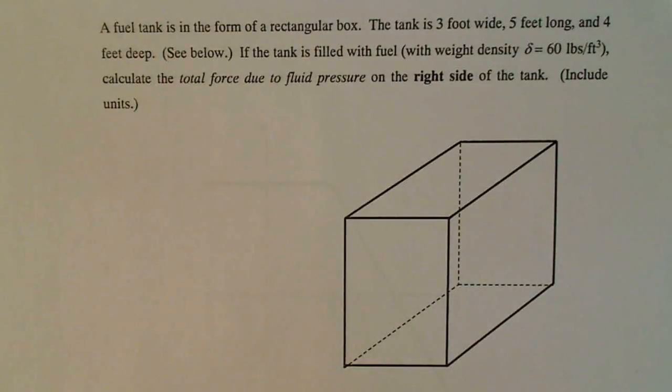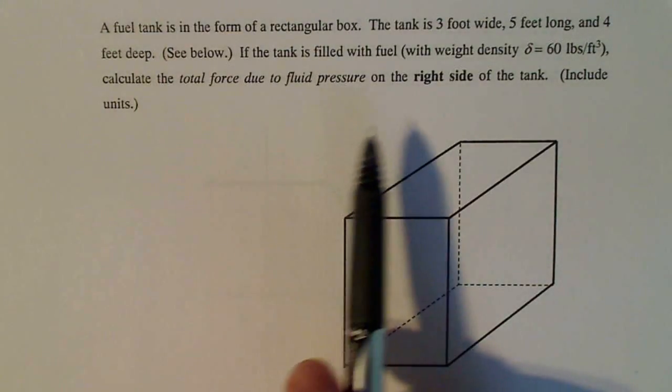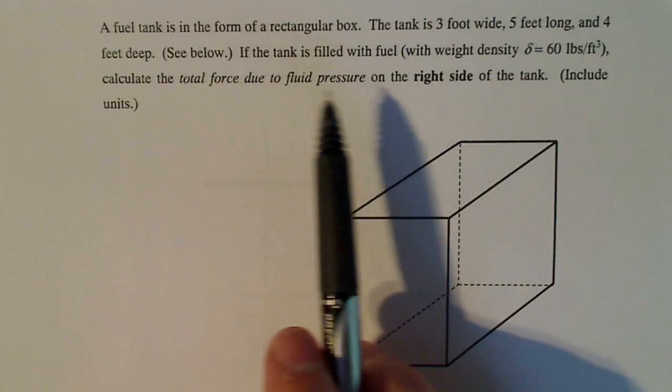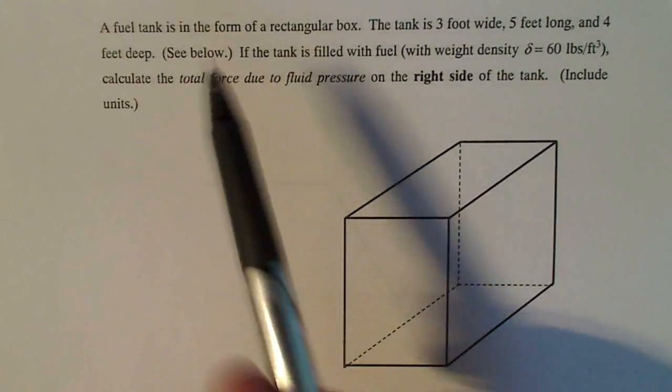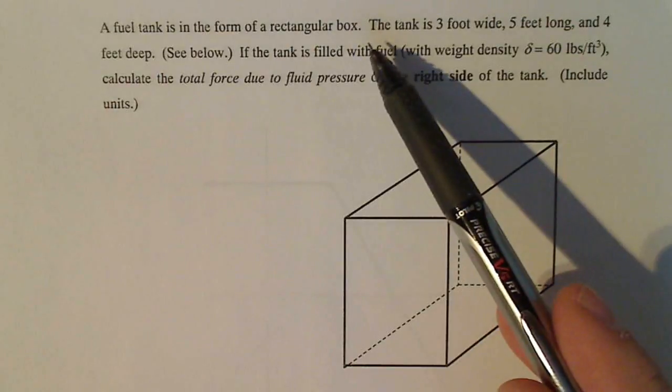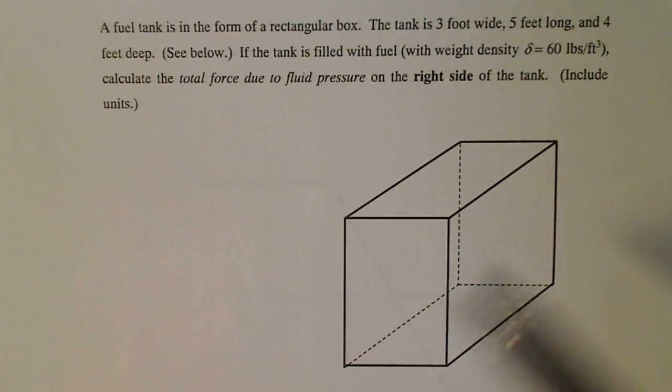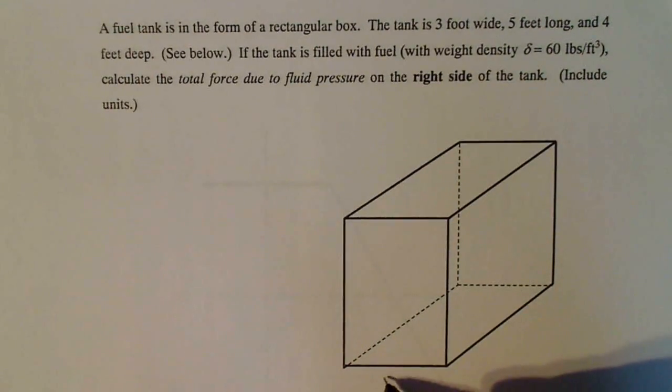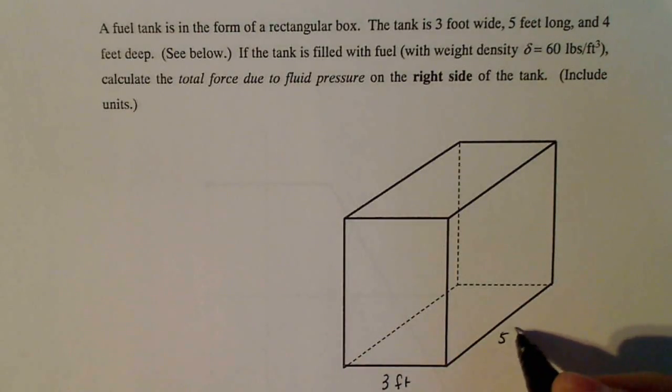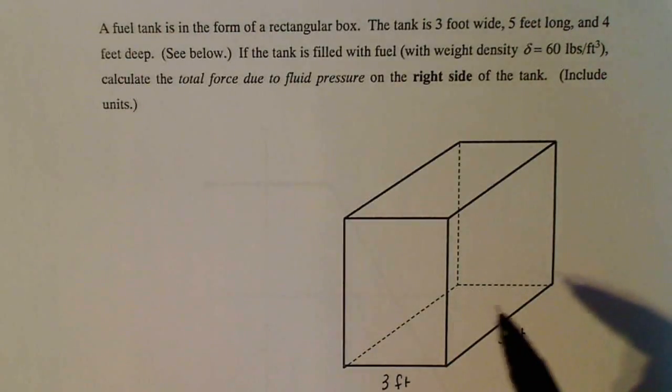Here's a really lovely problem regarding fluid pressure on a side. Now, a fuel tank is in the form of a rectangular box. The tank is three feet wide, so I'm going to label my graph as I go: three feet wide, five feet long, and four feet deep.